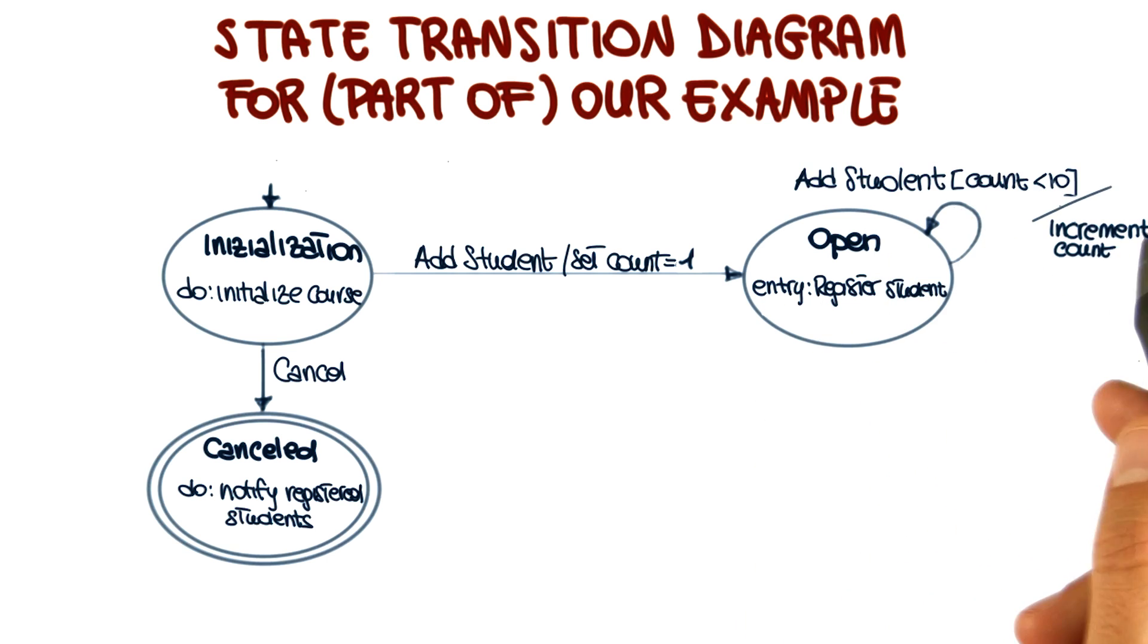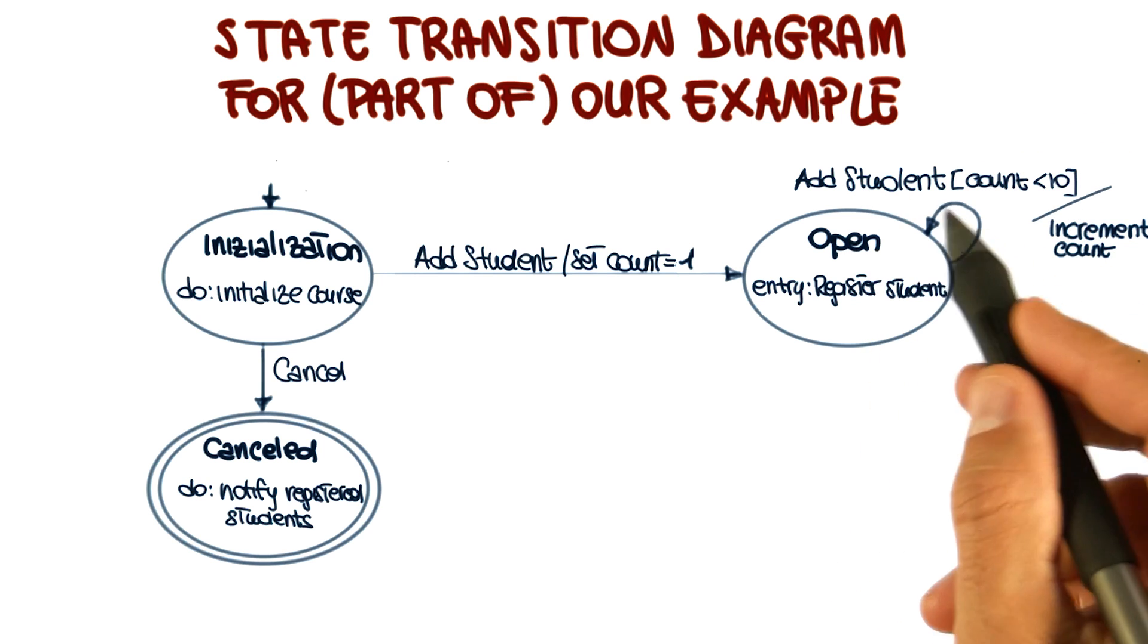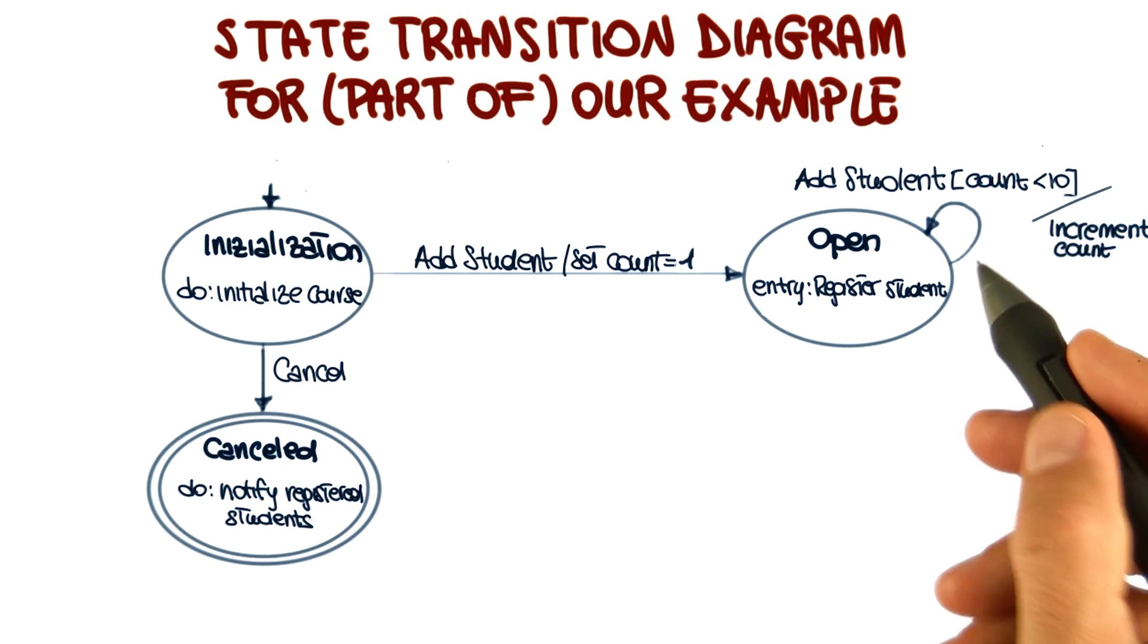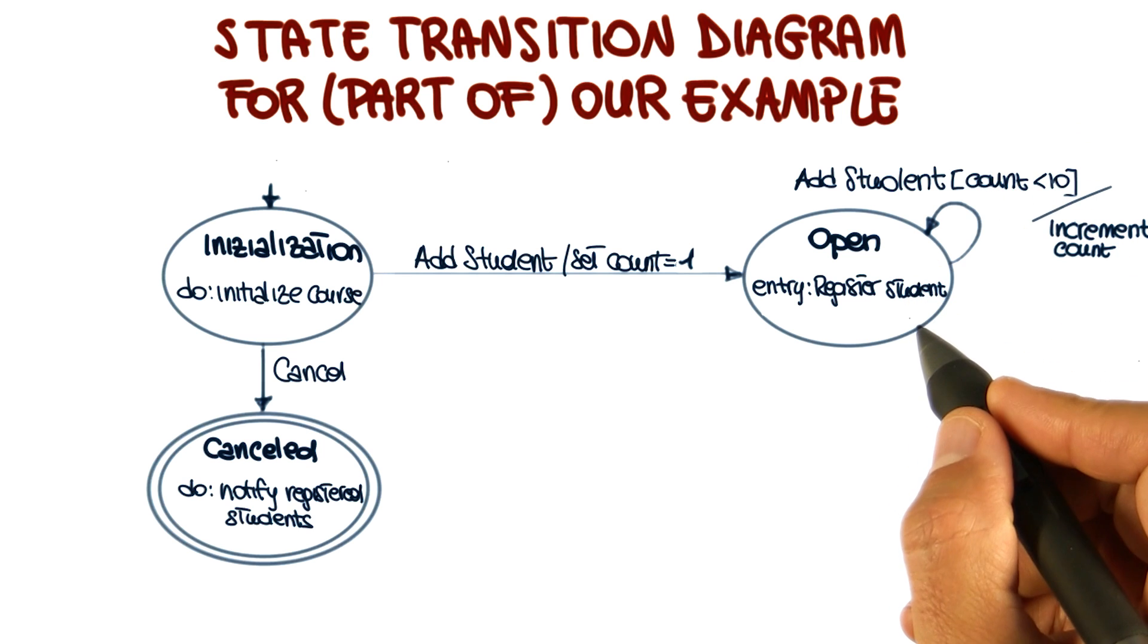At this point, more students might register. So other add student events might occur. And notice that we have a guard here that tells us that this event will trigger this transition only if the count is less than 10. So we're assuming that we're not going to have more than 10 students in our course offering.